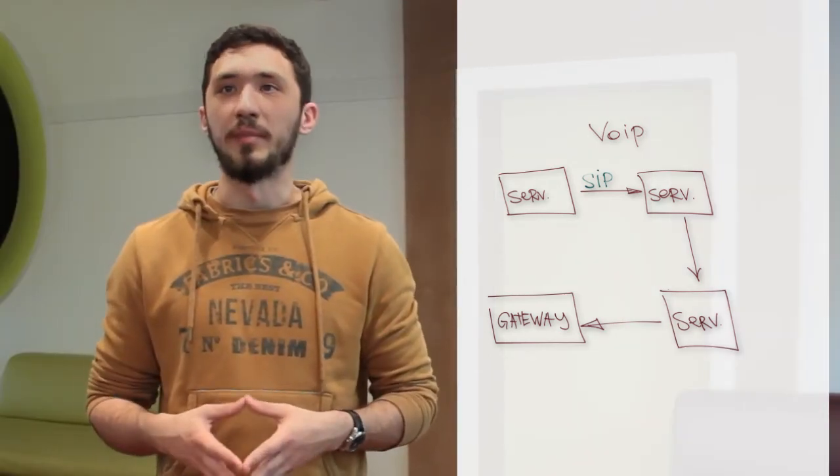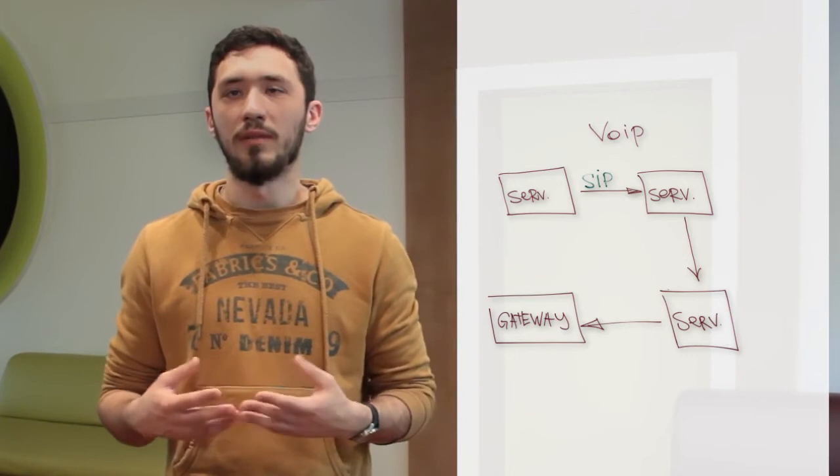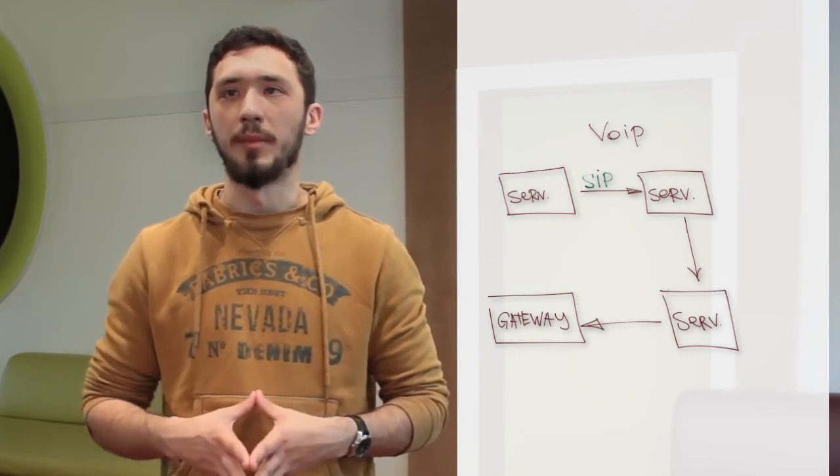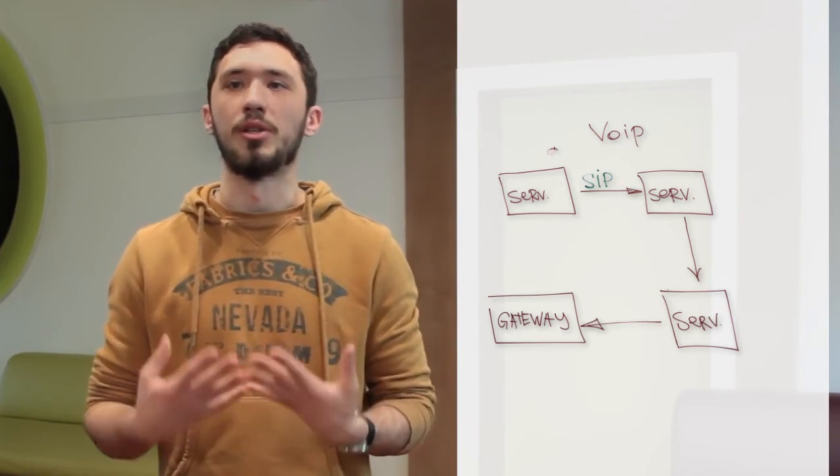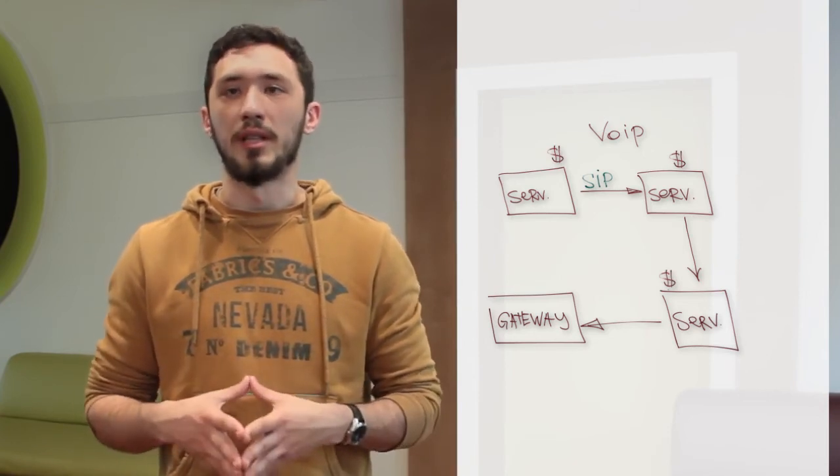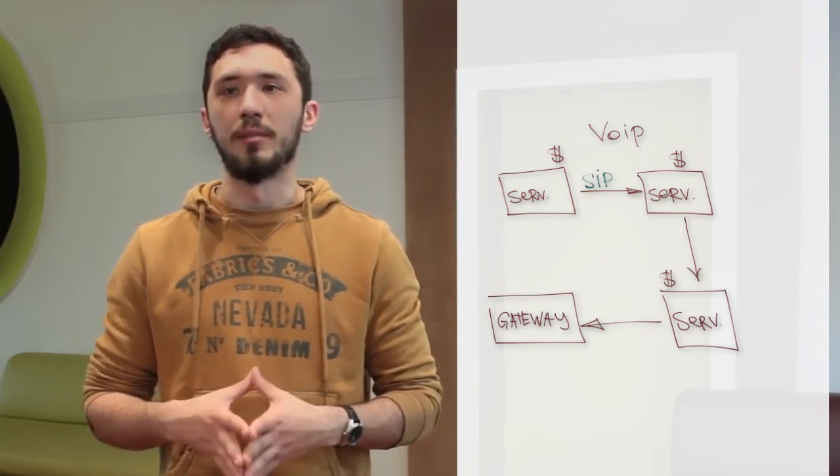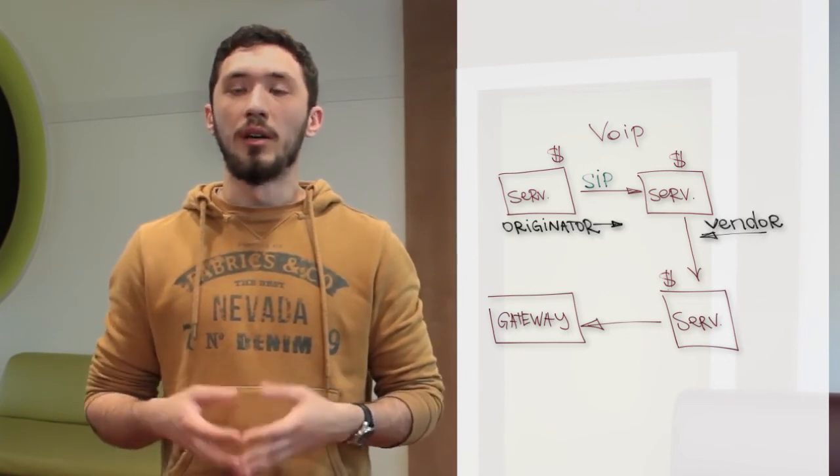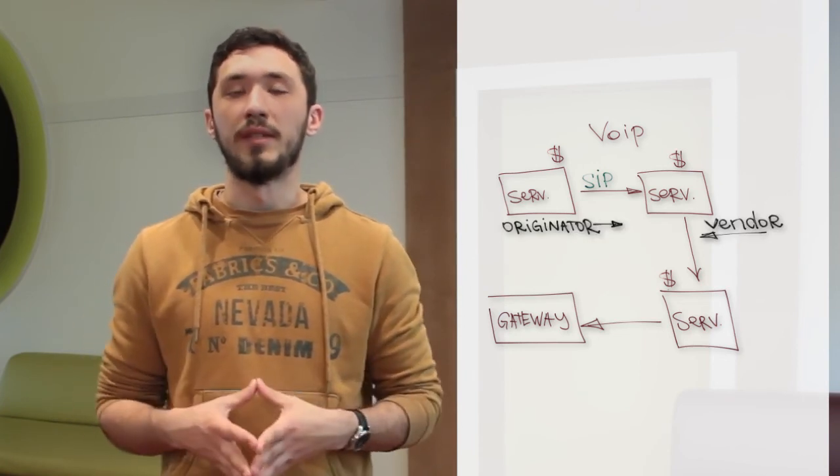As you can remember, a caller is paying for outgoing calls. So when a call flows through voice over IP transit companies, each of them charges a price usually for the conversation time. On the voice over IP market, transit companies are also called originators because they are originating the call further. On the other side, transit companies will receive inbound traffic.